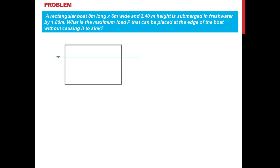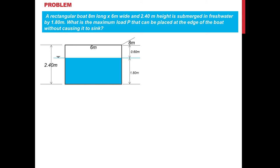Let us illustrate the problem. The rectangular boat has an overall height of 2.4 meters, a width of 6 meters, and length of 8 meters. It is submerged by 1.8 meters, so the exposed height is 2.4 minus 1.8, which equals 0.6 meters. This is the draft without P yet applied. The condition is that we place P at the edge of the boat so that it is on the verge of submergence.